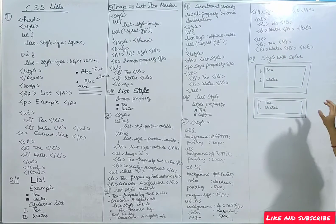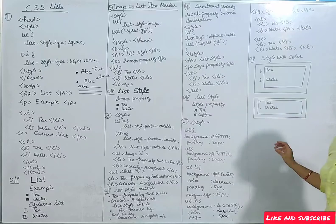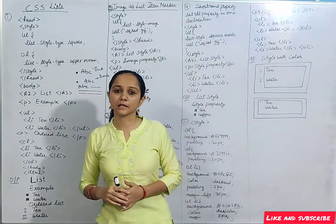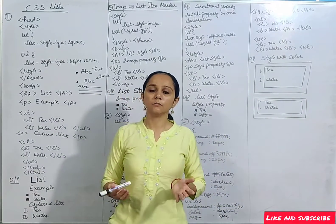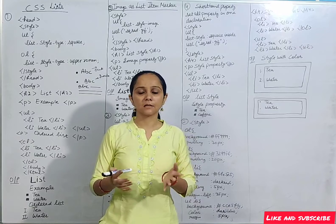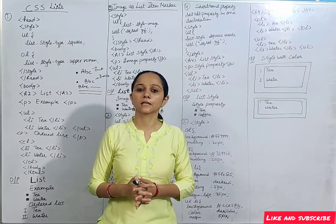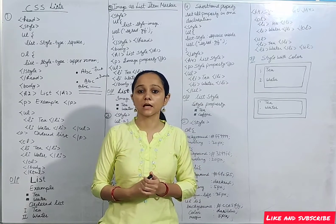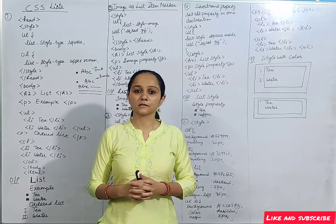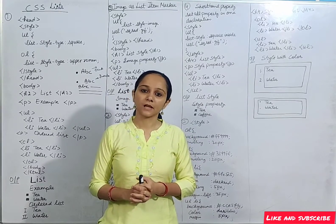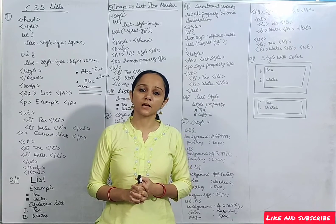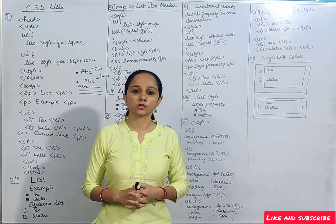So this was overall our CSS list. We have seen different kinds of lists — how you can add an image as a bullet, how you can add background colors, and how you can use the simple list. I think you will easily understand. Thank you so much for watching.